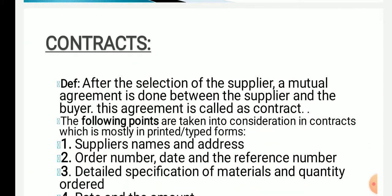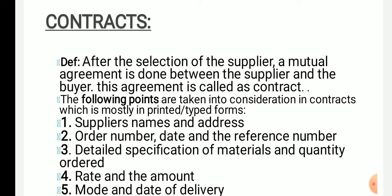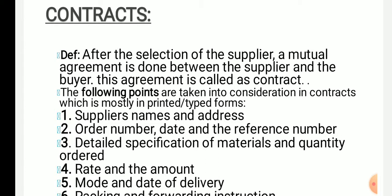Next is contract. After the tender is passed, a contract is formed. After the selection of supplier, a mutual agreement is done between the supplier and the buyer — this agreement is called as contract. Contract is nothing but an agreement between the buyer and the supplier.